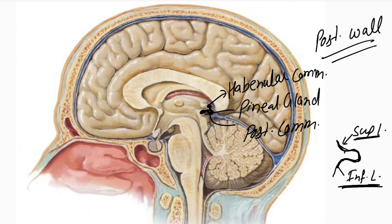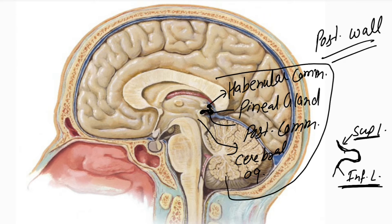Going further posteriorly, we also have the cerebral aqueduct. So, the structures forming the posterior wall are: the habenular commissure, the pineal gland, the posterior commissure, and the cerebral aqueduct.